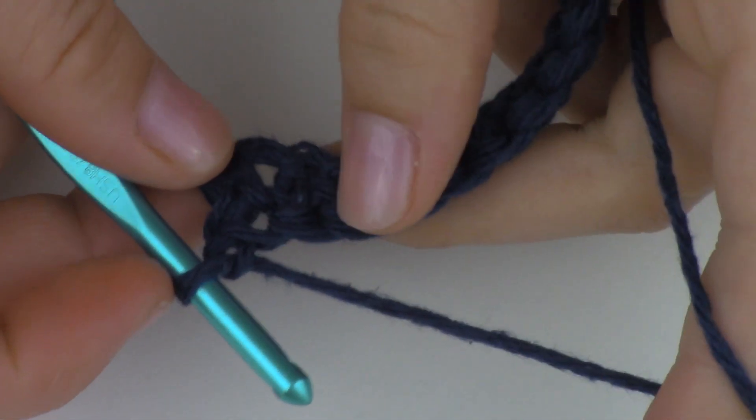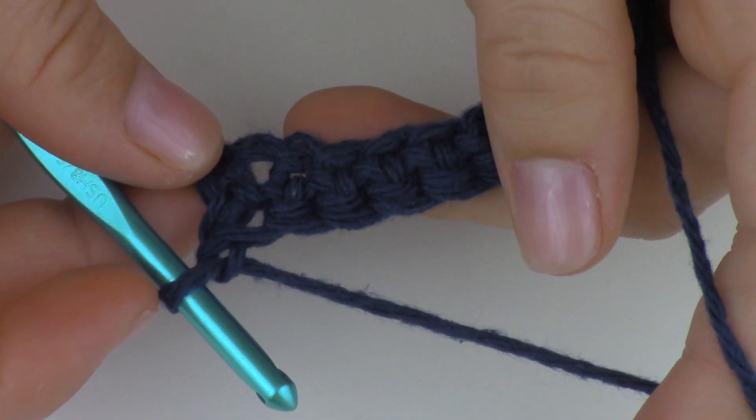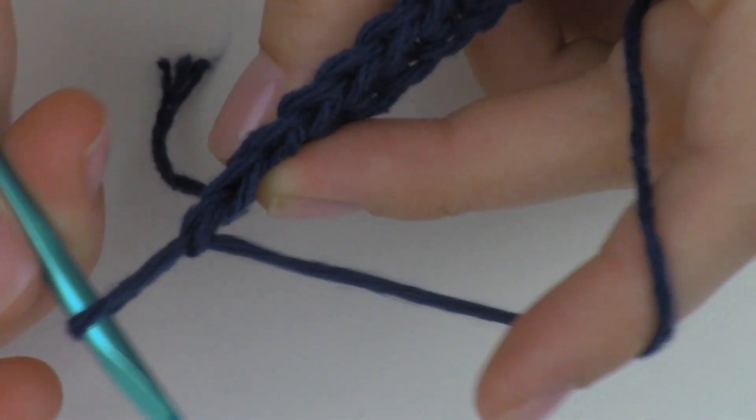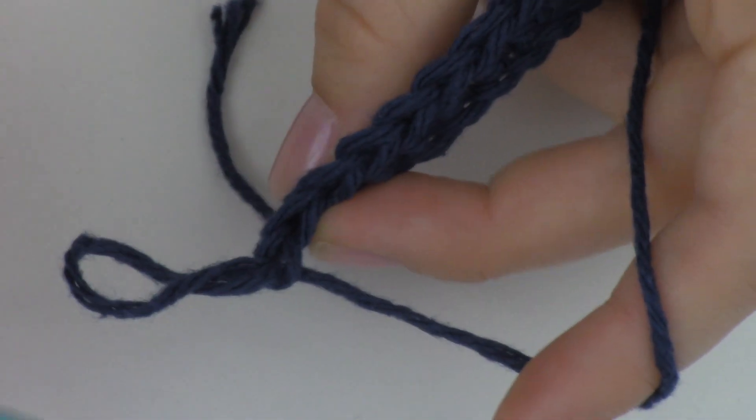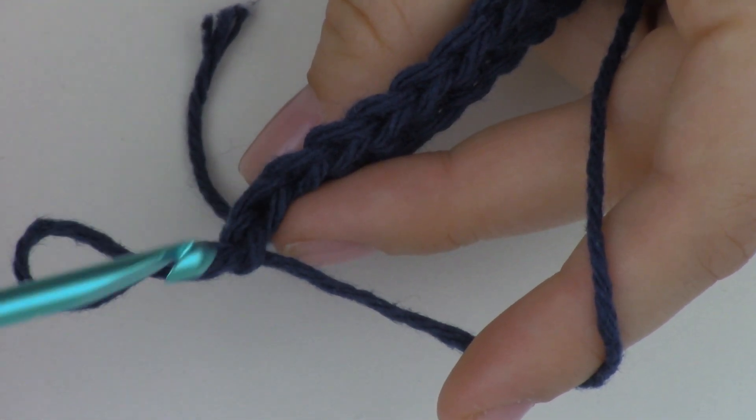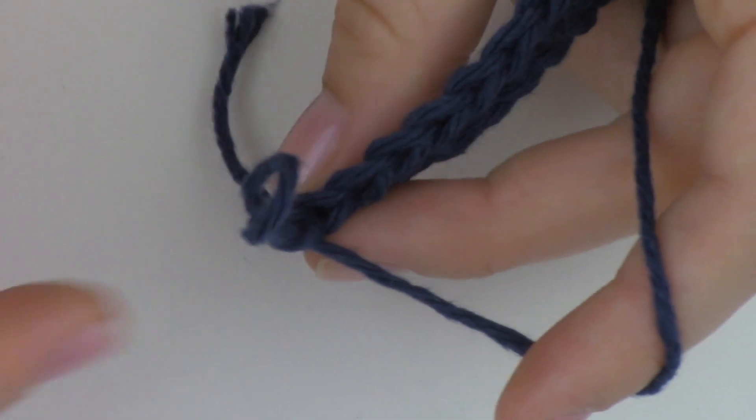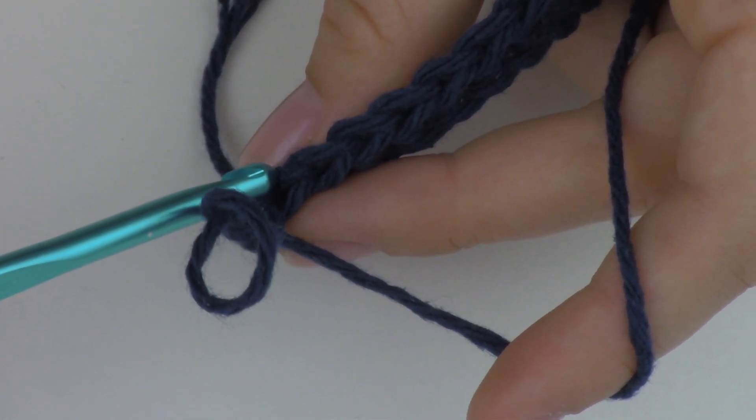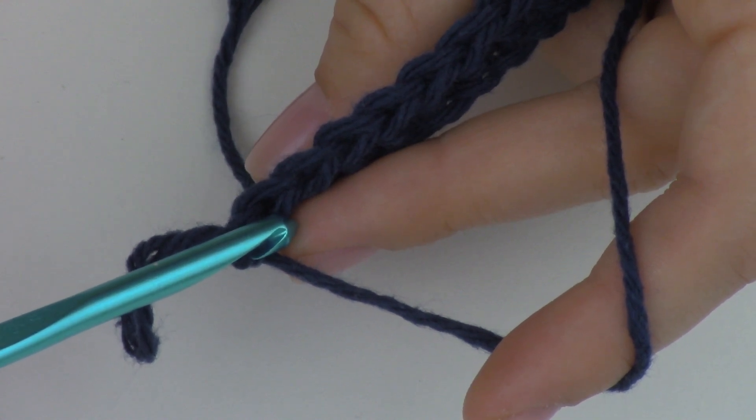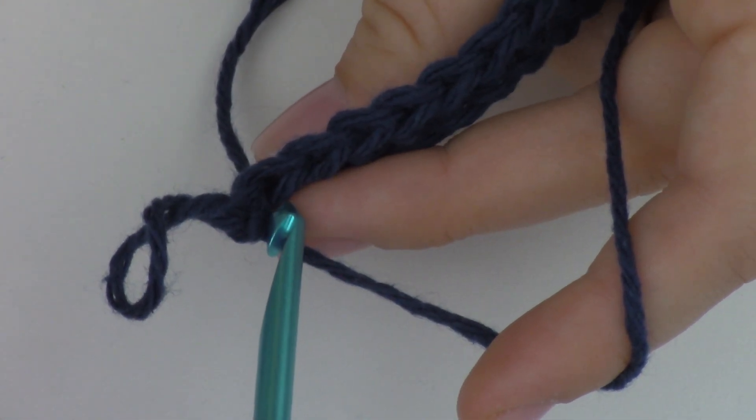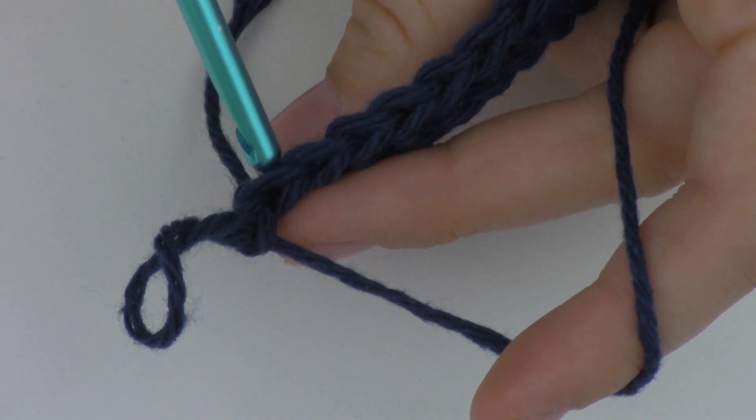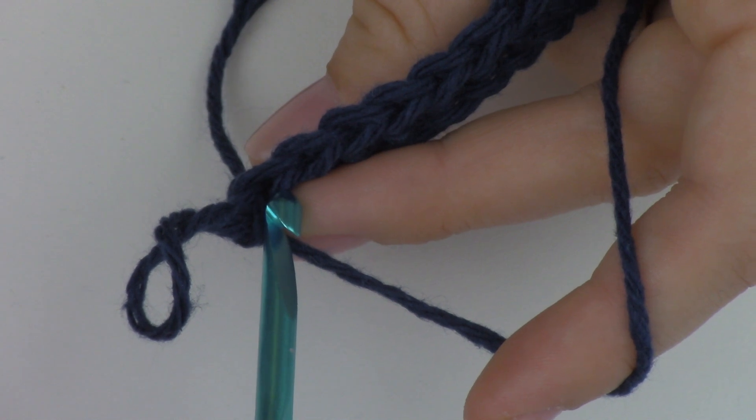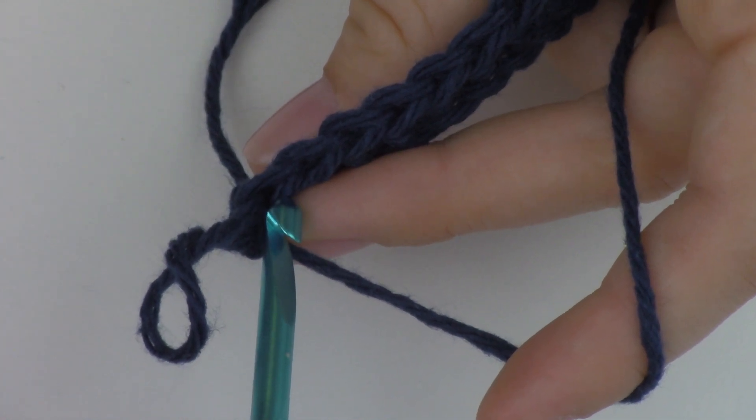From here on out we're only going to be working in the back loop of our stitches. So if you turn this way you notice that there are 2 legs of the stitch, also known as a V stitch. There's one that is closest to us, and then there's one that's farther away. That's the back loop back here and the front loop up here. We are only going to be working in the back loop. This will help to create the ribbed effect that we're going for.